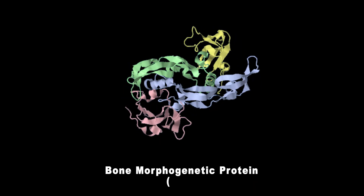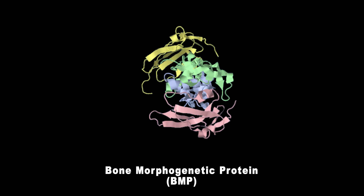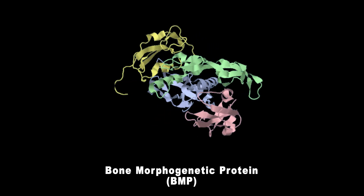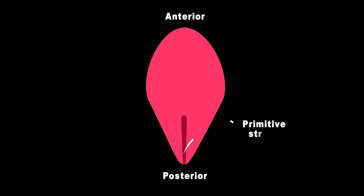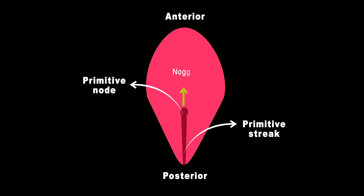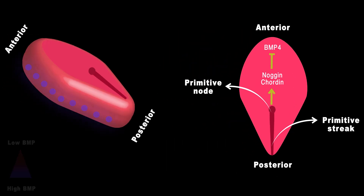BMP4 is a crucial protein involved in the development of the nervous system. During the primitive streak stage, the primitive node starts releasing two signals — noggin and chordin. These signals act as inhibitors of BMP, which creates a gradient of BMP in the embryo.